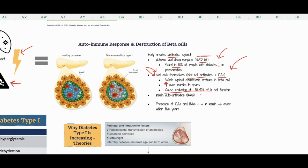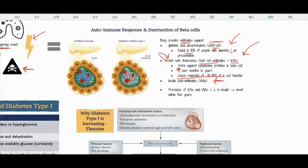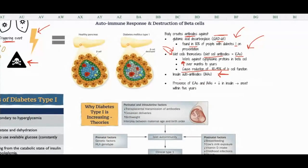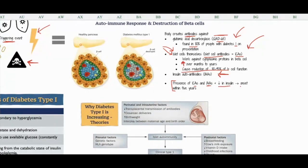Another target is insulin autoantibodies, or IAAs. It's actually really complicated, but what's really neat is that they can do tests now where if they detect ICAs and IAAs - antibodies working against islet cells and against insulin - plus you have a decrease in insulin, they can predict that you will develop type 1 diabetes within about five years.